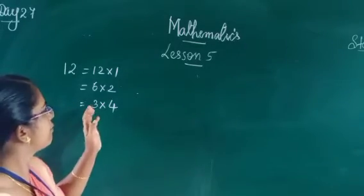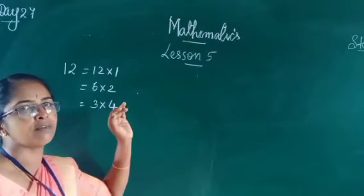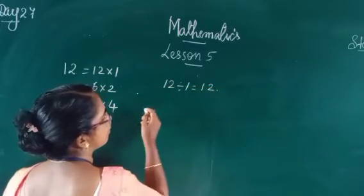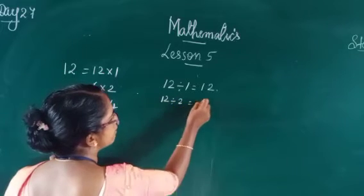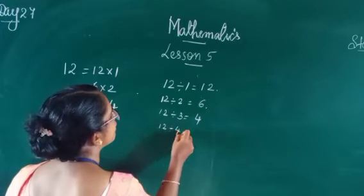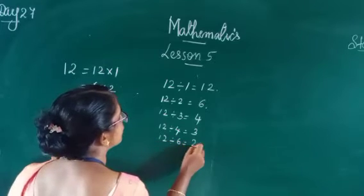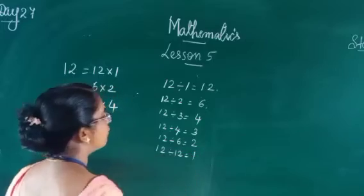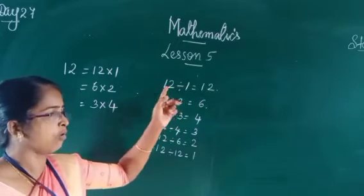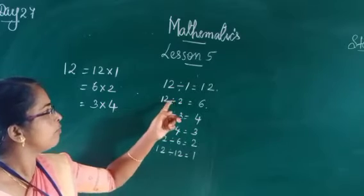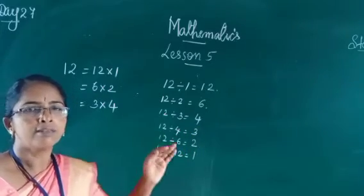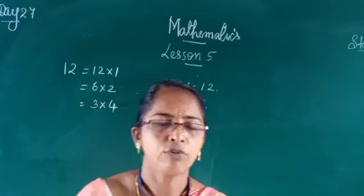We can also use multiplication in the way of division. That is: 12 divided by 1 is 12, 12 divided by 2 is 6, 12 divided by 3 is 4, 12 divided by 4 is 3, 12 divided by 6 is 2, and 12 divided by 12 is 1. Here we can completely divide 12 by each of these numbers — there is no remainder, the remainder becomes 0. In this case, we can say that these are the factors of the given number.